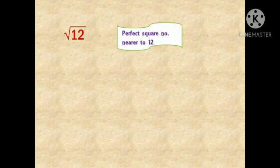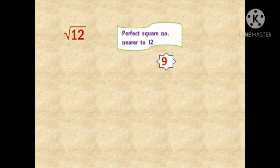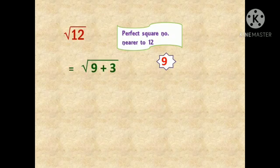First, let us find the square root of 12 — it is a non-perfect square number. The first step is to find the perfect square number nearest to 12. There are 2 perfect square numbers nearer to 12: 9 and 16. Let us take 9 as our nearest perfect square. The next step is to rewrite 12 as 9 plus 3. The value will not change because 9 plus 3 equals 12.